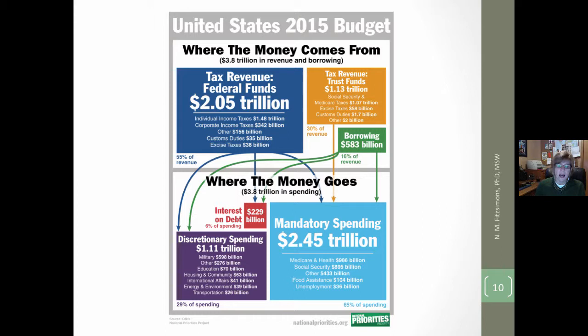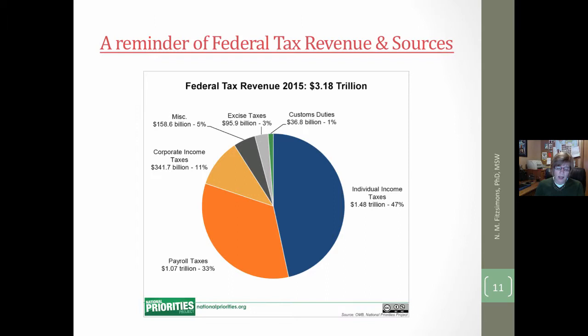This diagram shows where the money comes from — tax revenue from income, corporate, and other taxes, and money that comes through the trust fund, the Social Security FICA tax. The government needs to borrow when it falls short of the revenue needed to fund mandatory spending, discretionary spending, and interest on the debt. You can clearly see that mandatory spending exceeds discretionary spending by two to one.